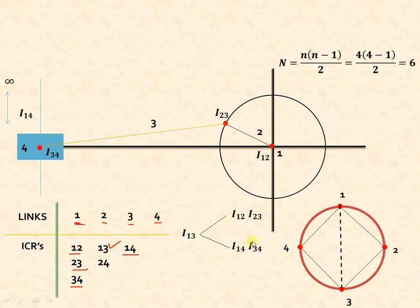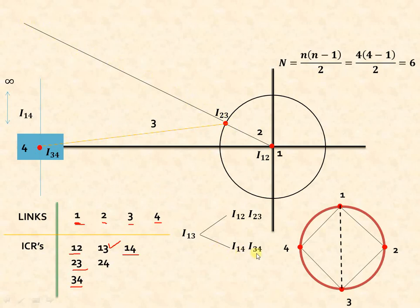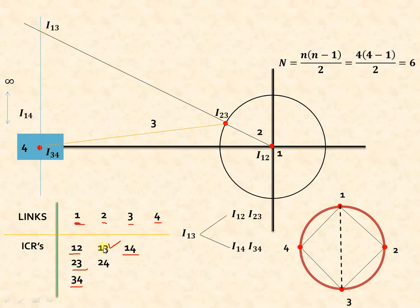To find ICR 1-3: join ICRs 1-2 and 2-3 — they are already joined — just extend them. Then for the second combination, ICR 1-4 (which goes to infinity) must pass through ICR 3-4, so extend a line through 3-4 perpendicular to the sliding path. Wherever these two lines intersect, that is ICR 1-3. In this way we have located ICR 1-3.